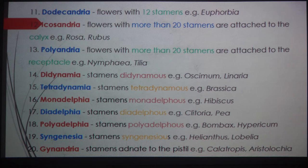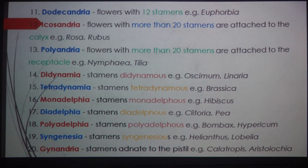Class fifteen is Tetradynamia: stamens are tetradynamous. Didynamous means there are four stamens, with two long and two short. In the case of Tetradynamia, there are six stamens total — four long and two short. If such a condition exists in a plant, it is included in Tetradynamia. Then class sixteen is Monadelphia: stamens are monadelphous, example Hibiscus.